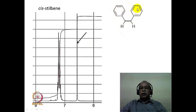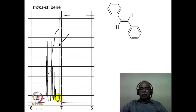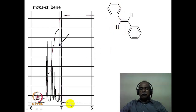In the cis isomer, the two hydrogens are away from the anisotropic effect of the phenyl group, so their chemical shift value should be lower compared to the trans isomer — around 6.5 ppm. In the trans isomer, each hydrogen is flanked by the two phenyl groups on either side. The anisotropic and ring current deshielding effect of the phenyl groups will be strongly felt by the proton, and so the two hydrogens of the trans isomer come above 7 ppm. This allows identification based on chemical shift, not coupling constant.